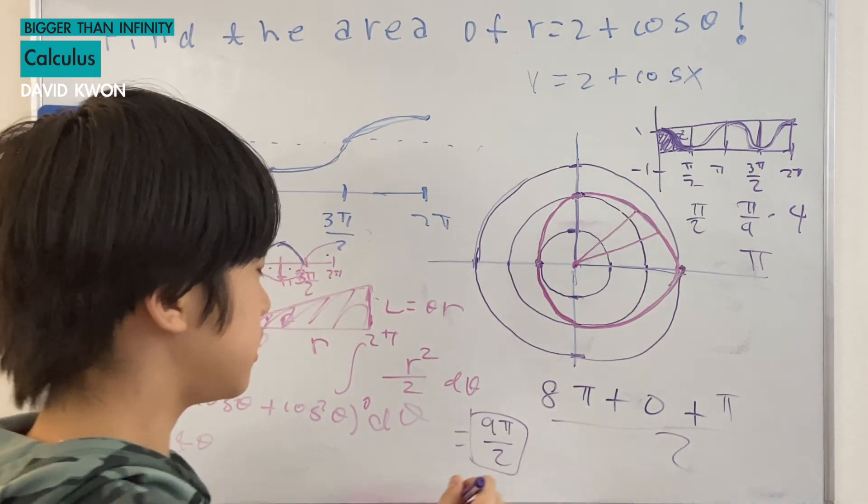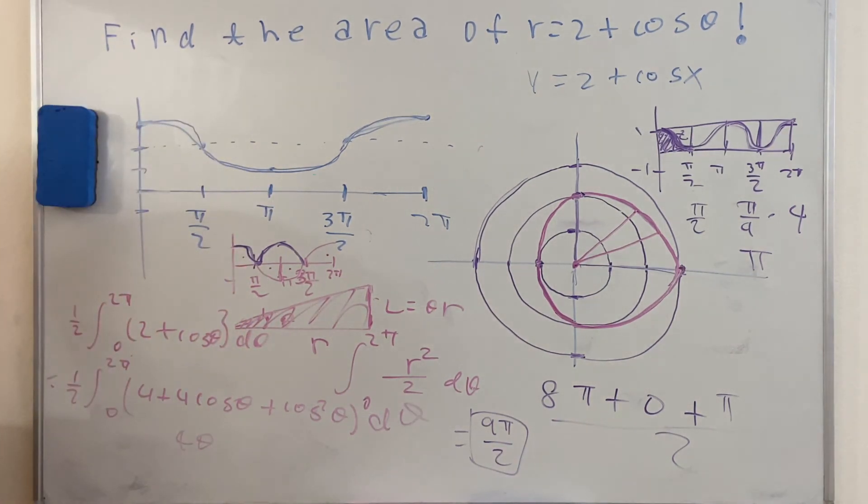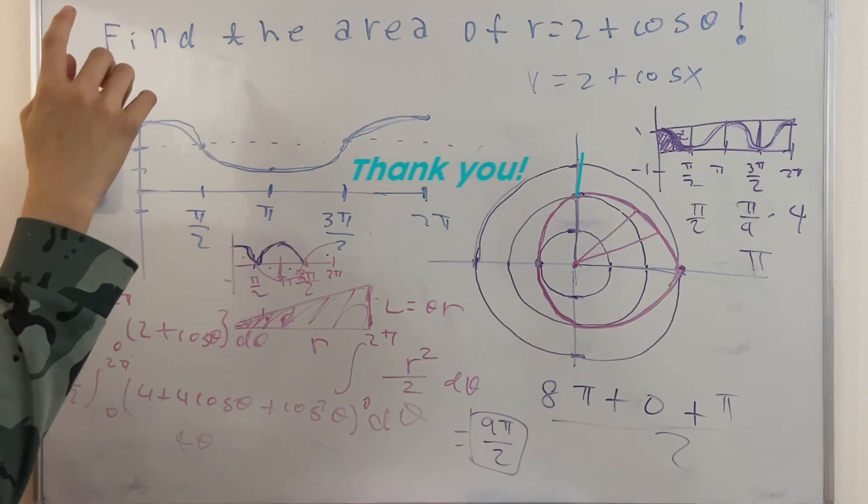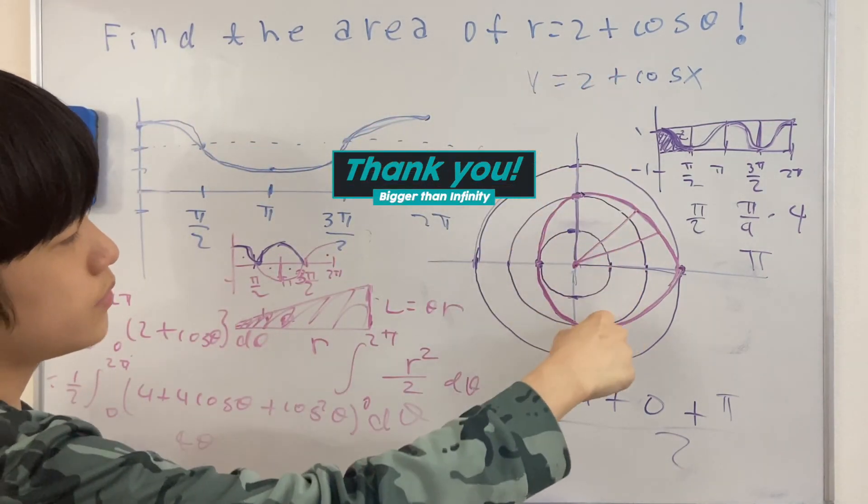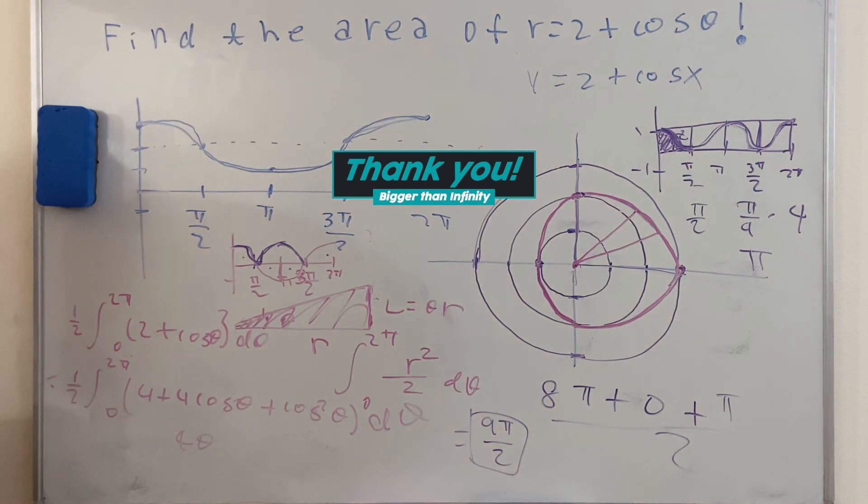This is the answer, and I want you guys to do that on your path. We just have found the area of r equals 2 plus cosine theta. This whole thing equals 9 pi over 2. Thank you guys so much for watching my video. See you guys in the next video. Bye.